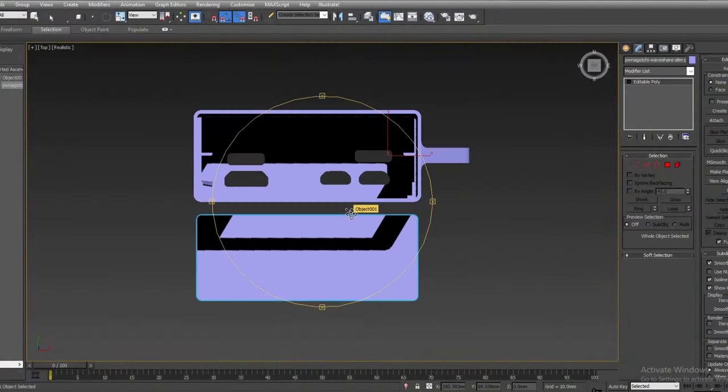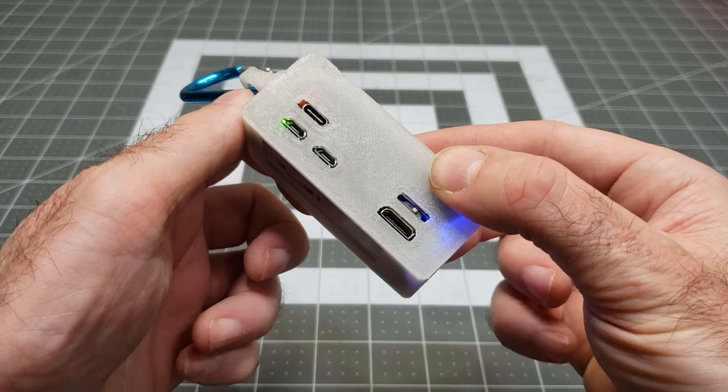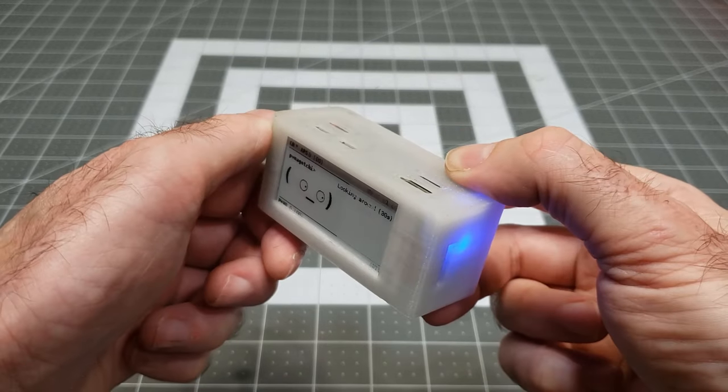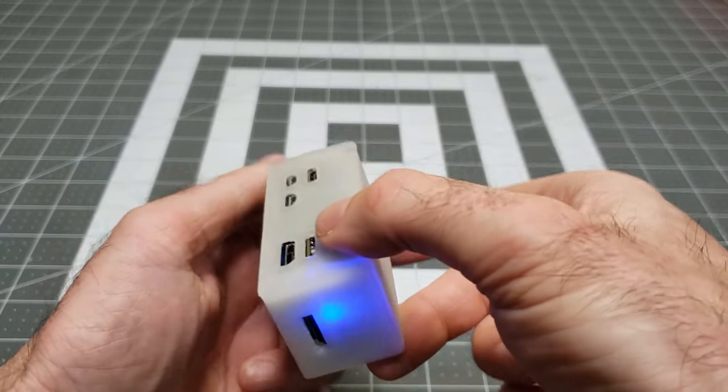Links to the STL files are in the description. This is glow-in-the-dark filament. It is translucent and allows you to see the indicator lights through the case.